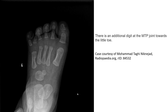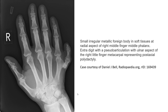This is an example of post-axial polydactyly. There is an additional digit at the MTP joint towards the little toe. This film shows a small irregular metallic foreign body in soft tissue at the ulnar aspect of the right middle finger's middle phalanx, with pseudo-articulation with the ulnar aspect of the right little finger metacarpal, representing post-axial polydactyly. Thank you.